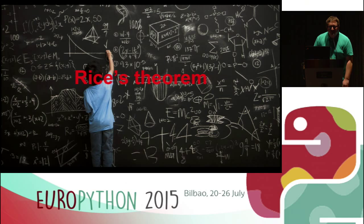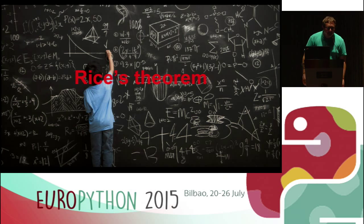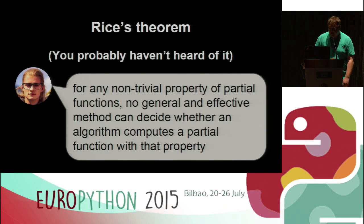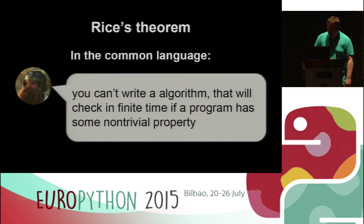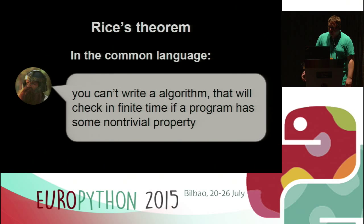Are there any mathematicians here? No? Okay, so we'll go fast on that. There's a theorem called Rice's Theorem in math that has some very obscure definition, but in short words — words that a normal human can actually comprehend — it means that we can't automatically verify if a program has some non-trivial property.